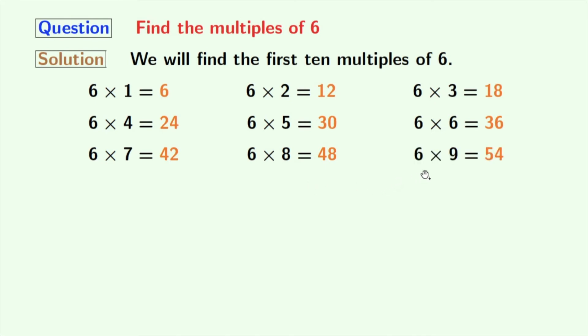Multiplication of 6 and 9 gives us 54. If we multiply 6 with 10, we will get 60.